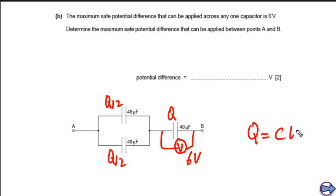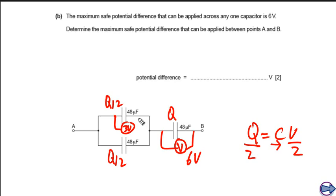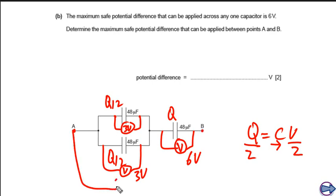Since Q equals CV and all capacitors are identical, if the charge becomes half then the voltage also becomes half. So the potential difference across each parallel capacitor is 3 volts. The total potential difference between points A and B is therefore 3 volts plus 6 volts, which equals 9 volts.